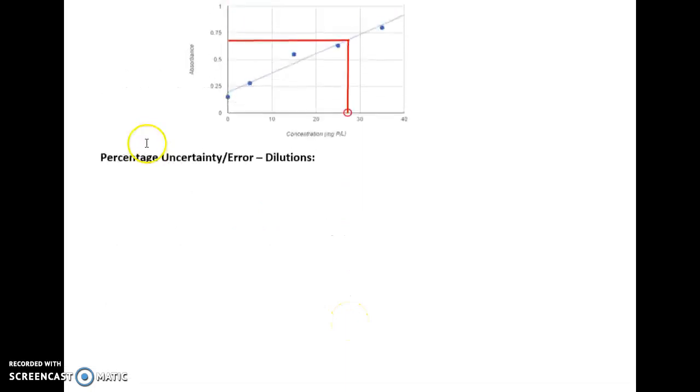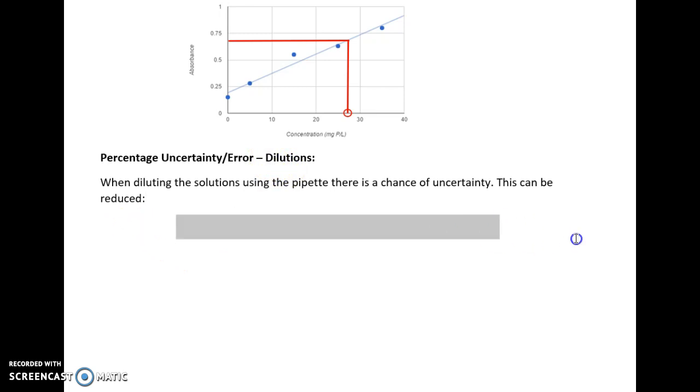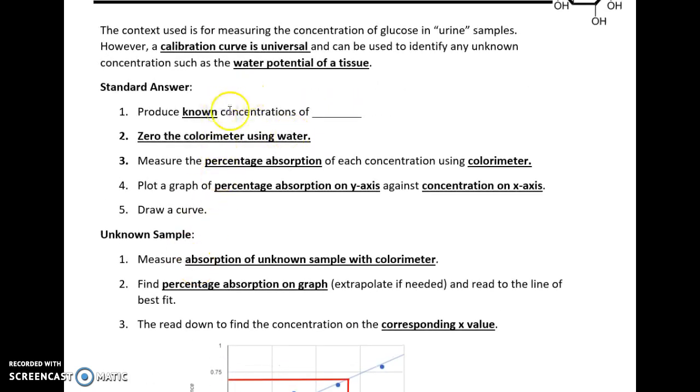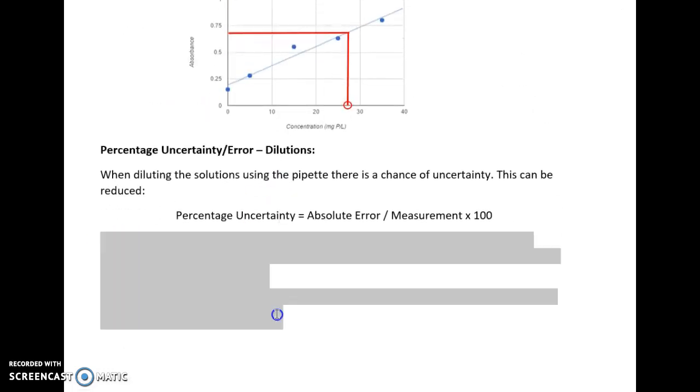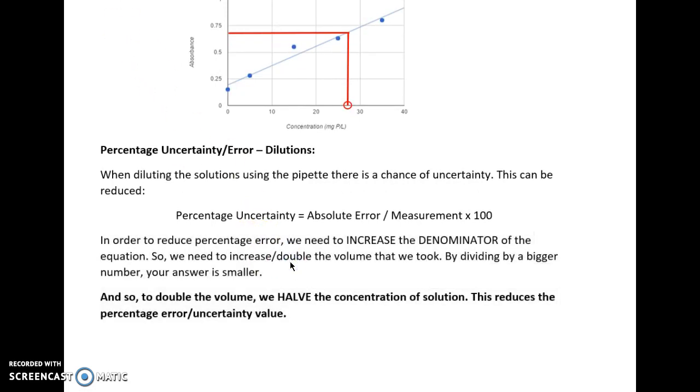So if we look at percentage error, this is something that just measures the likelihood of error within something. Everything will have a chance of uncertainty. However, if we look at it in a dilution perspective, whenever you dilute a solution using a pipette, there is a chance of uncertainty. So we would dilute our solutions in order to produce the known concentrations. So percentage of uncertainty is absolute error divided by whatever measurement you're taking times 100. So how can we reduce the percentage uncertainty?